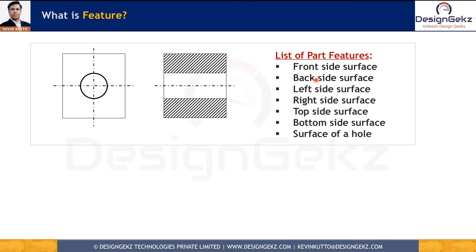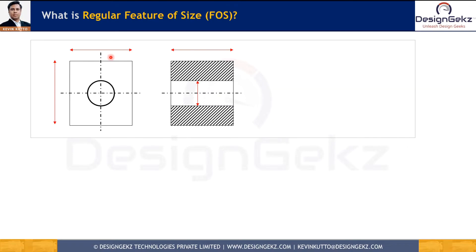The front, back, left, right, top, and bottom sides of the part are features, and the surface of the hole is also a feature. If there is a slot on the part, the surface of that slot is also a feature. Now that we understand what a feature is, let's understand what a regular feature of size is.